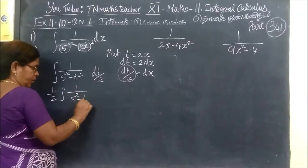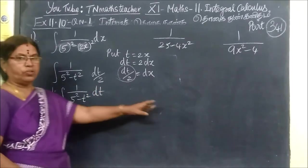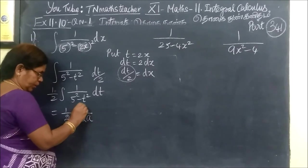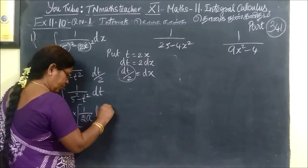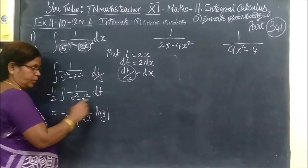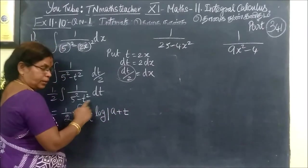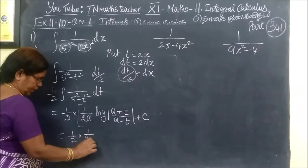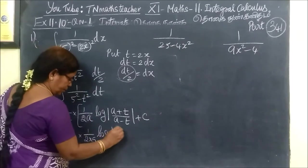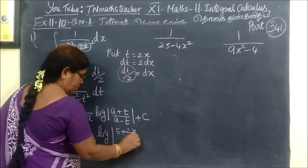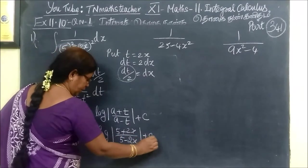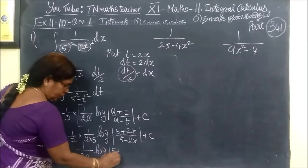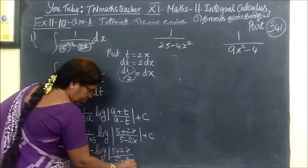So we have 1 by 5 squared minus t squared dt. Applying the formula 1 by 2a into log of a plus t by a minus t plus C, where a equals 5. So this becomes 1 by 2 into 1 by 2 into 1 by 5 into log of 5 plus t. Replacing t with 2x: 5 plus 2x. Then 5 minus 2x plus C. So the answer is 1 by 20 log of 5 plus 2x by 5 minus 2x plus C.